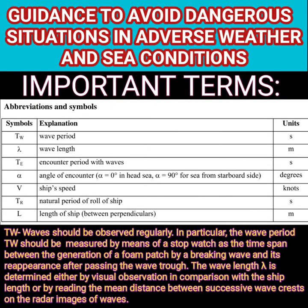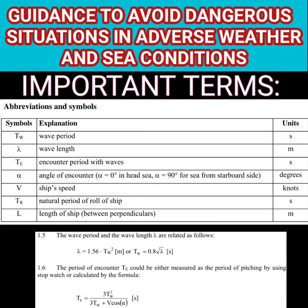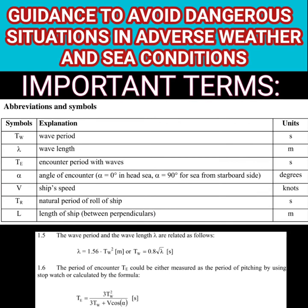Before I start sharing the information, it's important to understand a few key terms used throughout this video. The first one is wave period. Wave period is the time taken by a wave to pass one single point. It is recommended that you observe the waves, look at the foam patches, and note the time interval between those foam patches. That time interval is called the wave period. While observing waves you can also compare the length of waves with the length of the ship. From crest to crest is one wavelength, or from trough to trough is one wavelength, and the time it takes is the wave period.